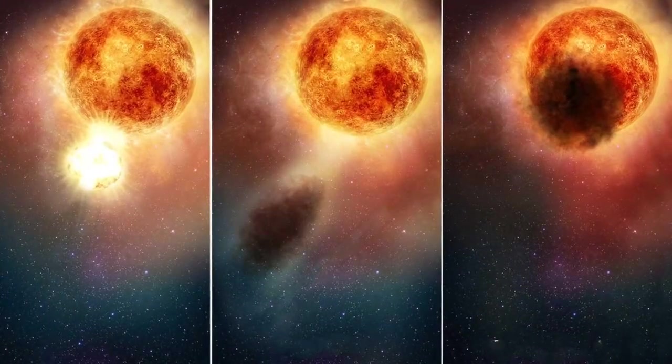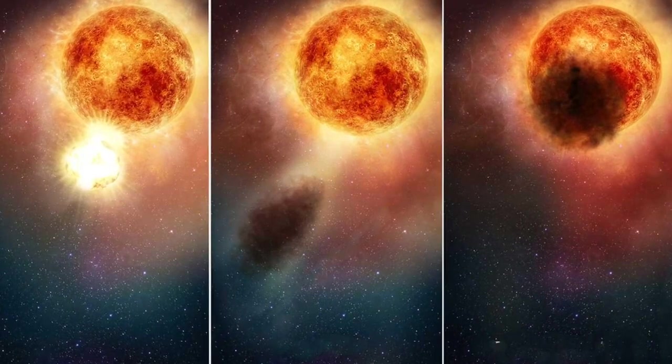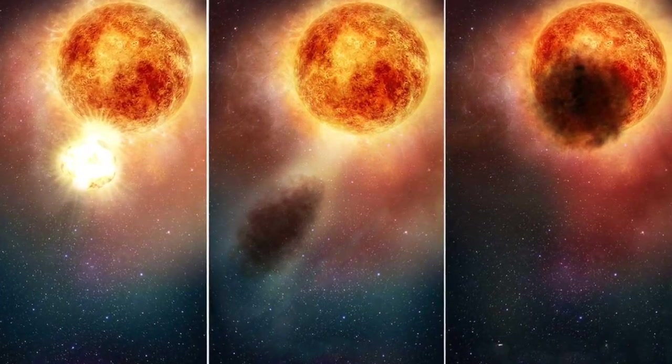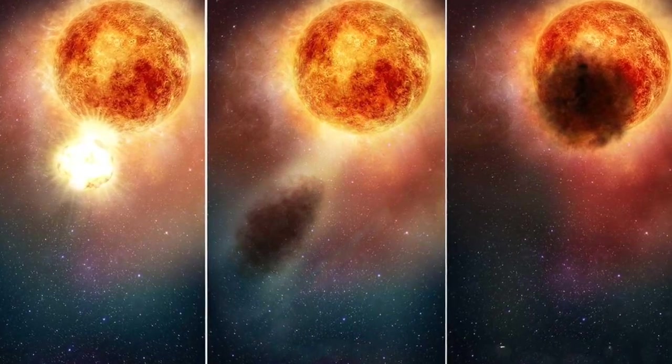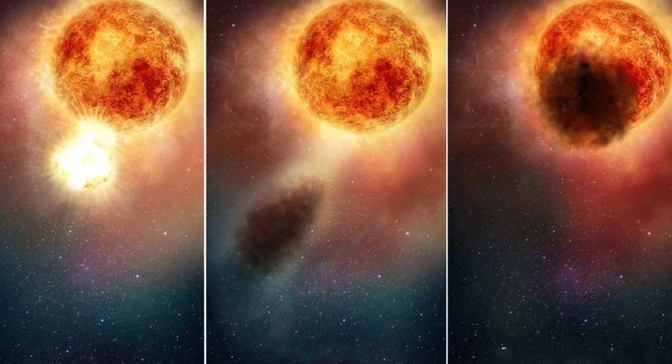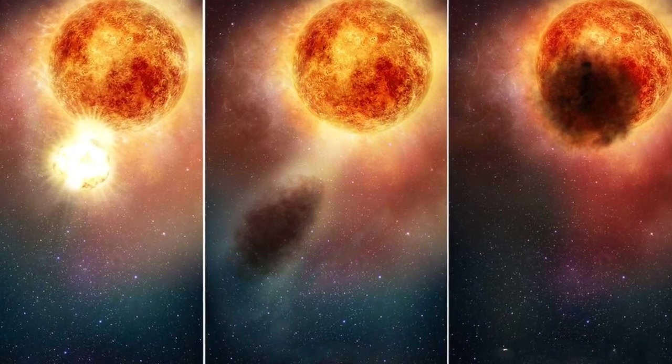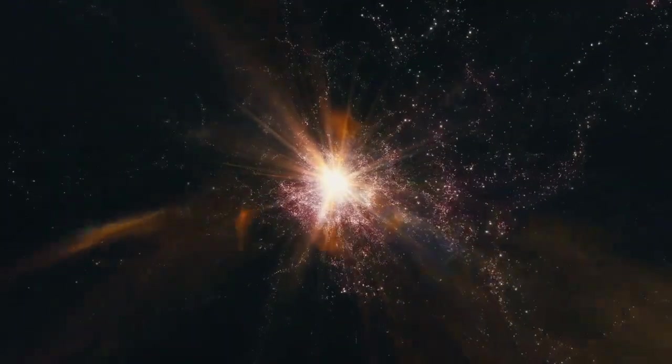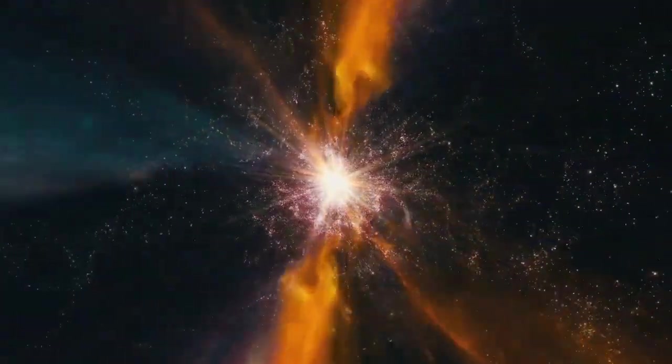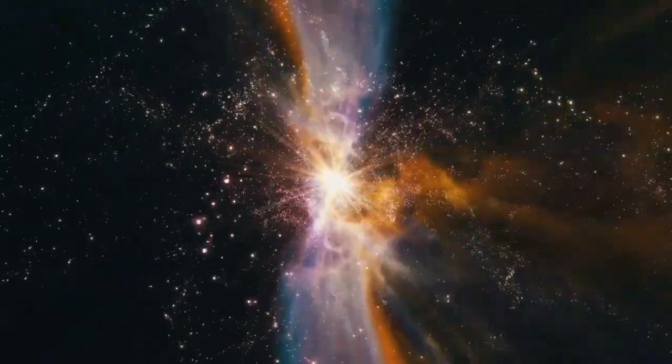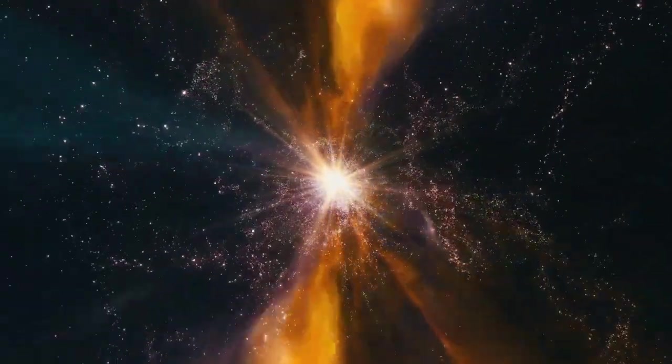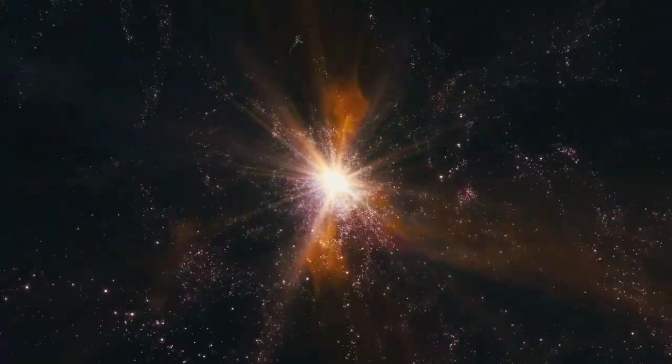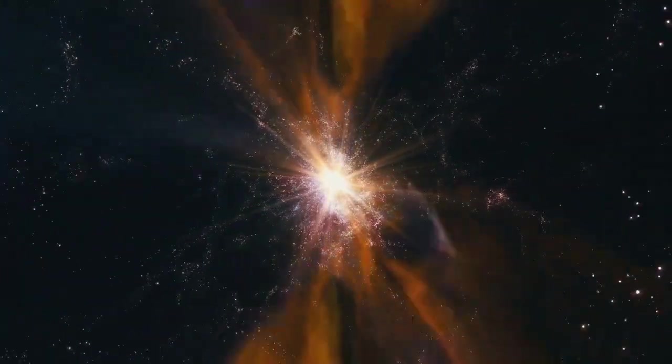But what would be the implications of a Betelgeuse supernova for Earth and our solar system? It is important to note that, despite Betelgeuse's relative proximity in cosmic terms, 650 light-years represent an astronomical distance. Such vast distances serve as natural barriers against the direct effects of a supernova. Our atmosphere, with its protective shield, would absorb most of the cosmic rays and radiation produced by the supernova, safeguarding life on Earth from direct harm.